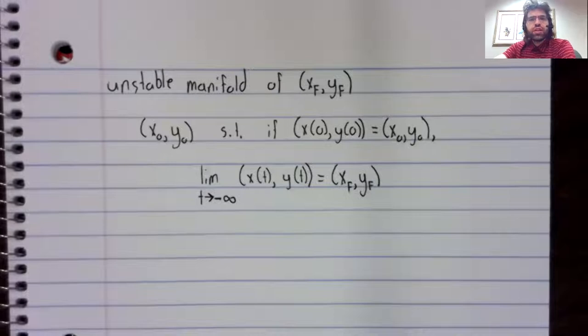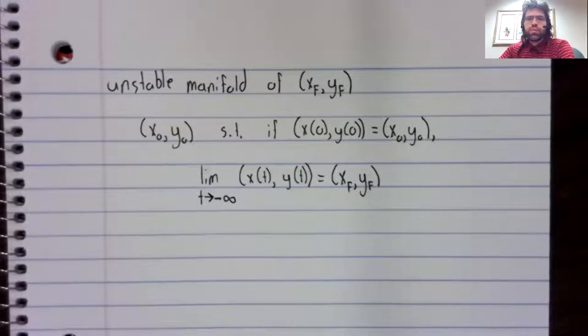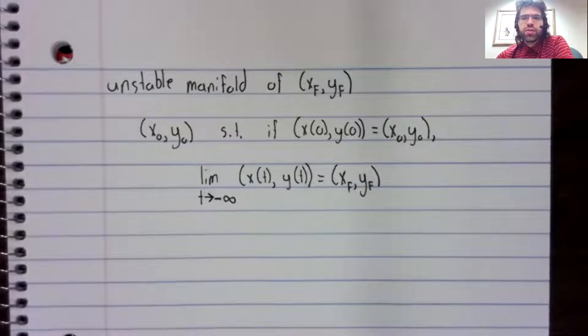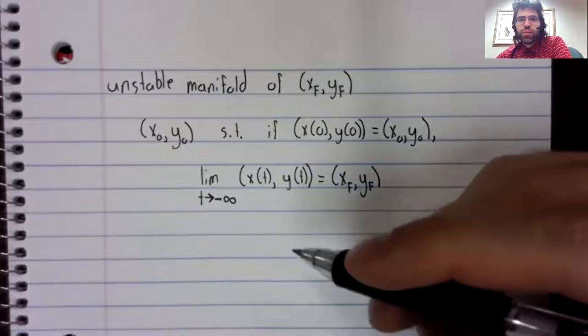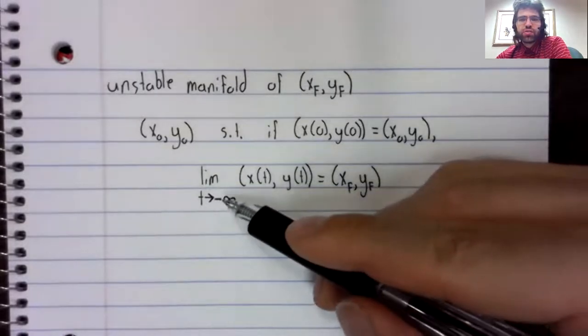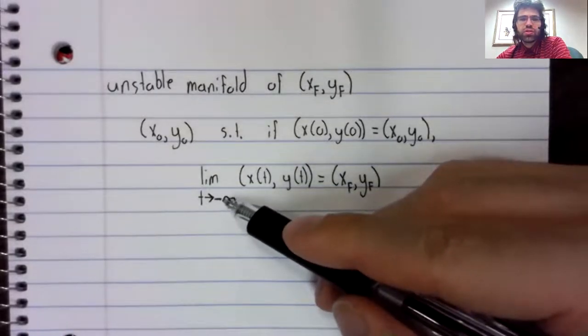The definition of the unstable manifold of a fixed point is almost identical to the definition of the stable manifold. In fact, there is only one difference and it's right here.